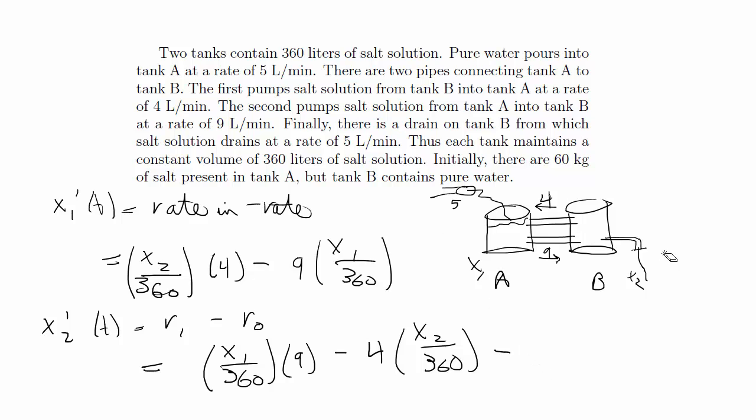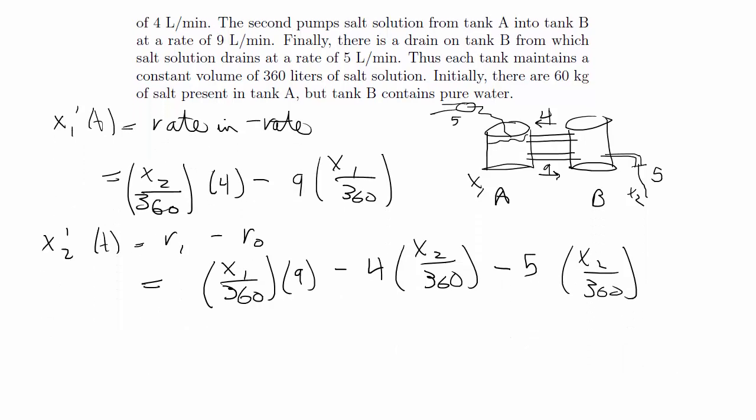we also have to consider the rate going out from the drain. That's going to be solution drains at a rate of 5, so that makes sense to keep a constant volume. So it's going to be 5 over x2 over 360. Alright, so not too different.